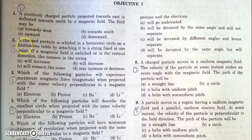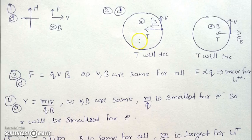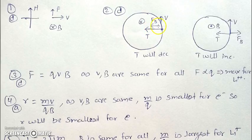In the next question, there is a charged particle which is moving in a horizontal circle with the help of a string, and when a magnetic field is switched on in the vertical direction, we have to comment on the tension — whether it will increase or decrease. If the magnetic field switched on is into the plane of paper, the magnetic force will also be in this direction. V cross B is in this direction, assuming the charge to be positive.